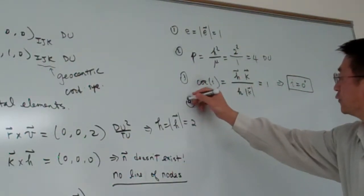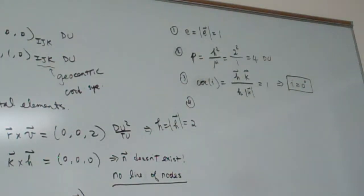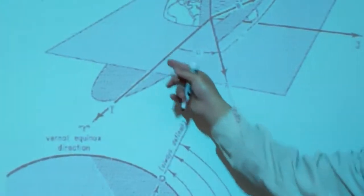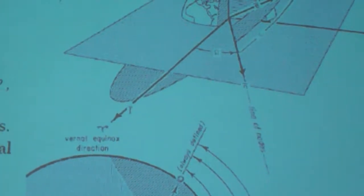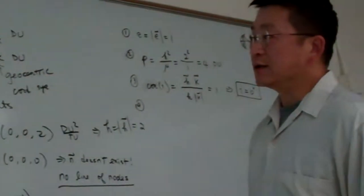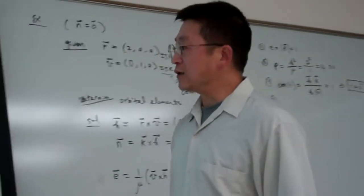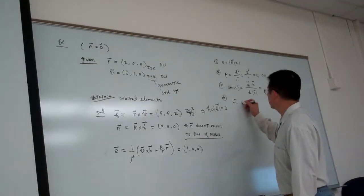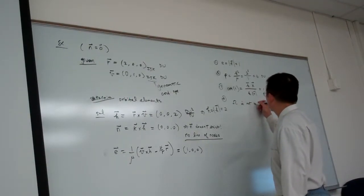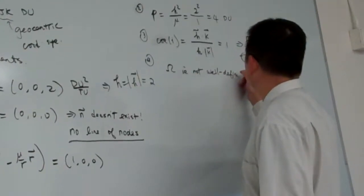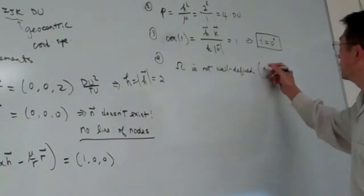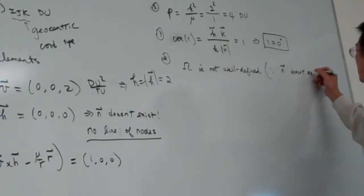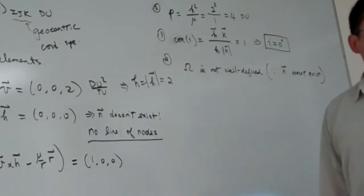Then, we determine the fourth one. The fourth one is capital omega. So now, we're going to determine this one. Okay. And here, already, we know the line of nodes doesn't exist. So omega is not defined.